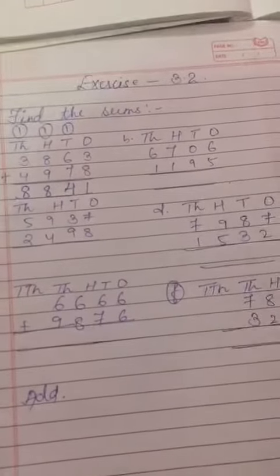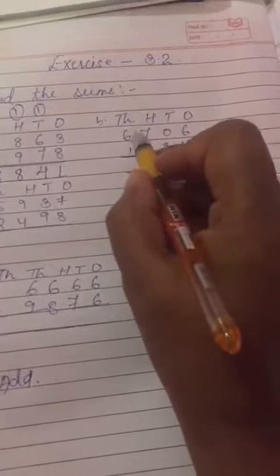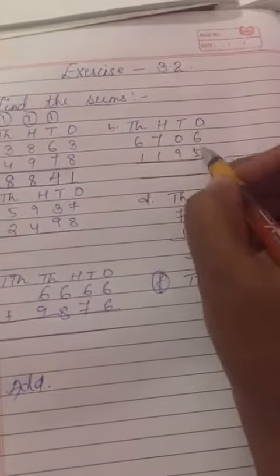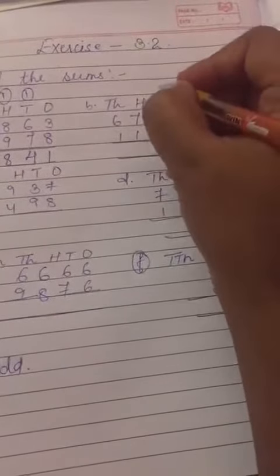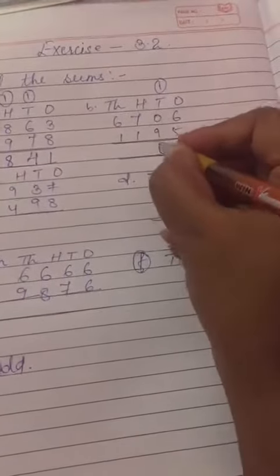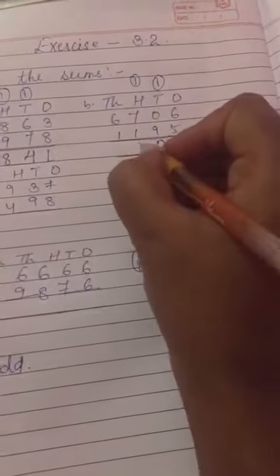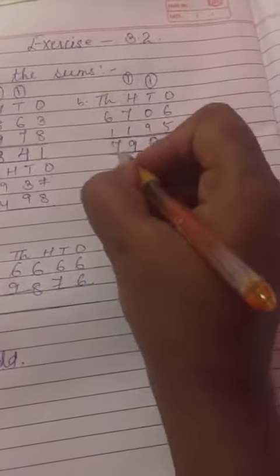Now question number 2. 6 and 5, 11, 11 ka 1, 1 humara carry. 9 or 1, 10, 10 ka 0. 1 humara carry, 7 or 1, 8. 8 and 1, 9. 9 and 6 and 1, 7, ok?